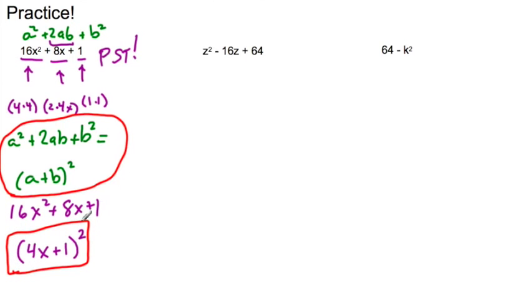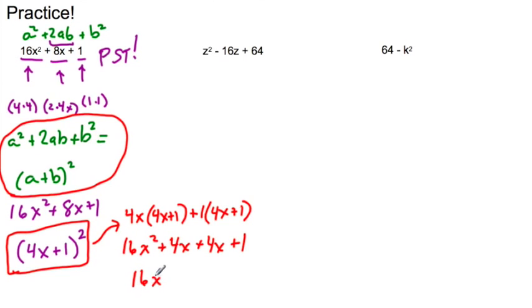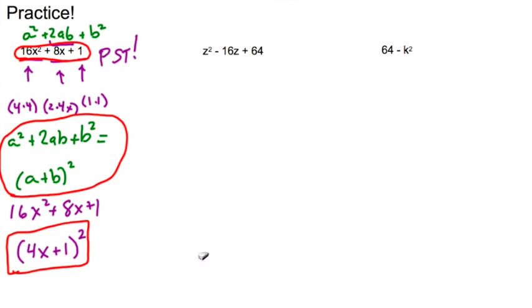Now if I really want to, I can go ahead and test this. I'm going to test this out the long way. And I have 4x times (4x + 1) plus 1 times (4x + 1). And what I see when I expand everything out, you see that I end up with 16x² + 8x + 1, which is what I started out with in the beginning. So you can always check your work if ever you're unsure that you have the right answer. But trust me, if you're using special products and factoring like you should, you're going to be fine.